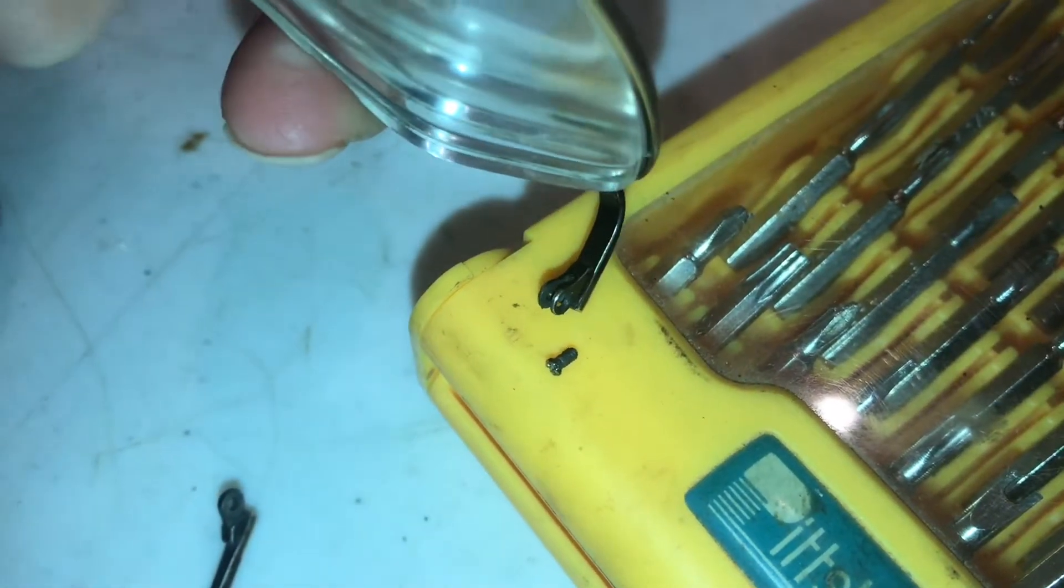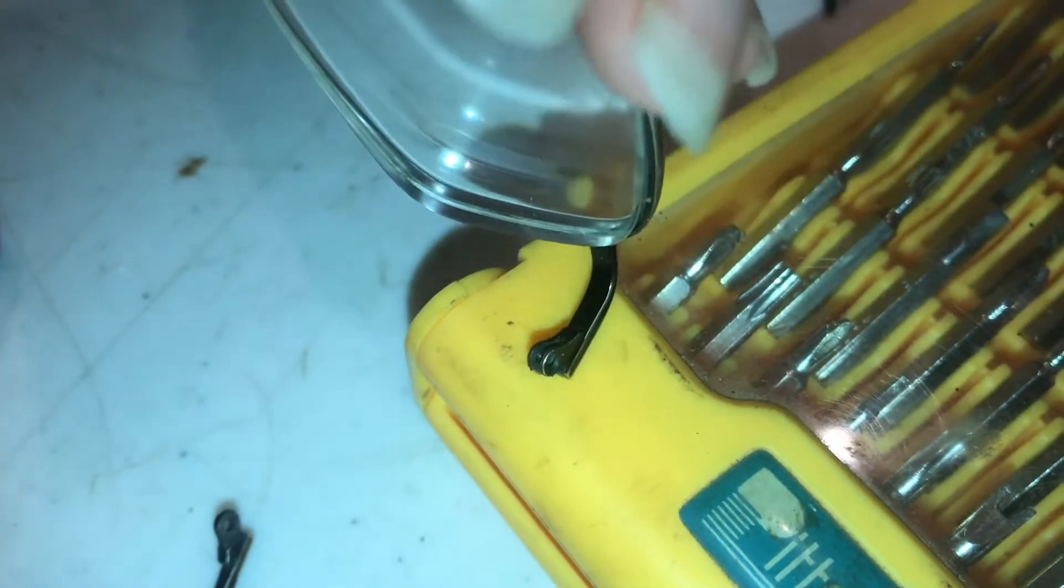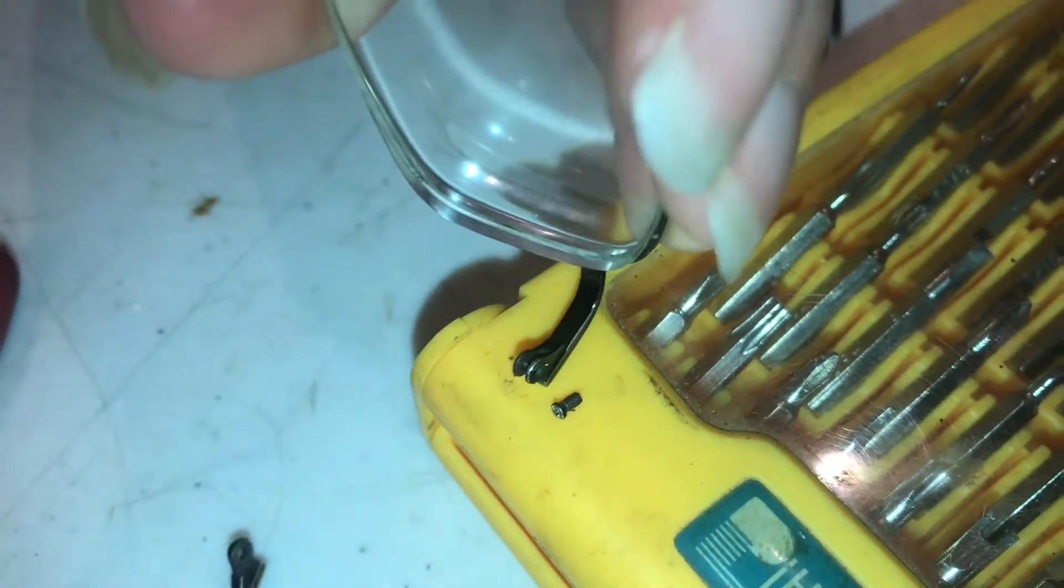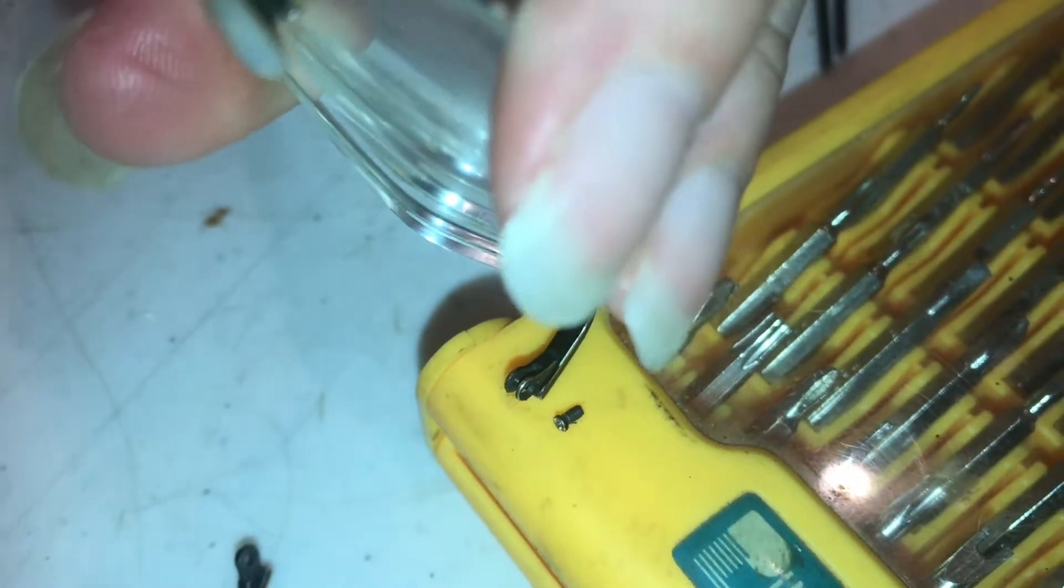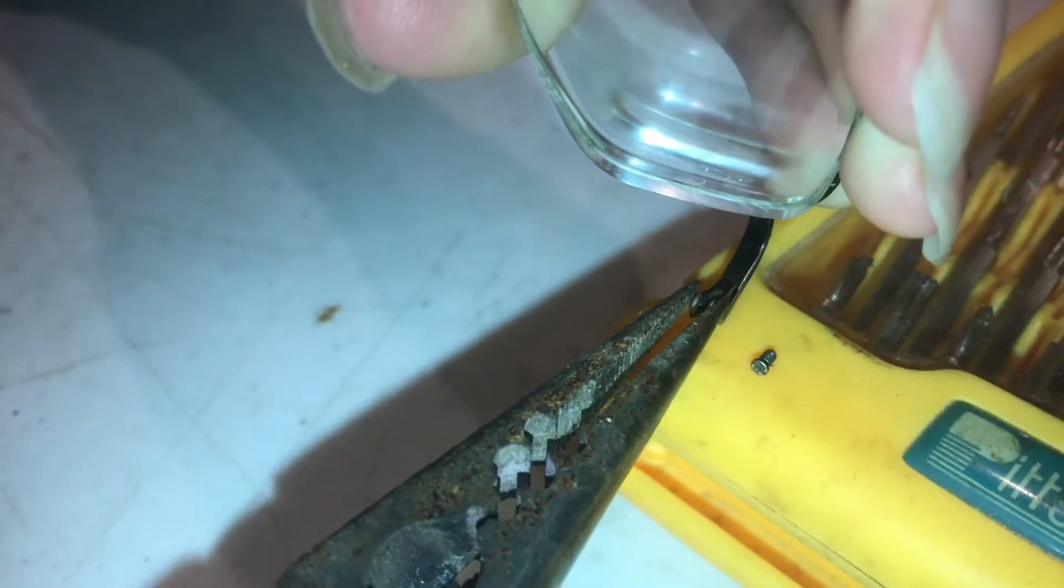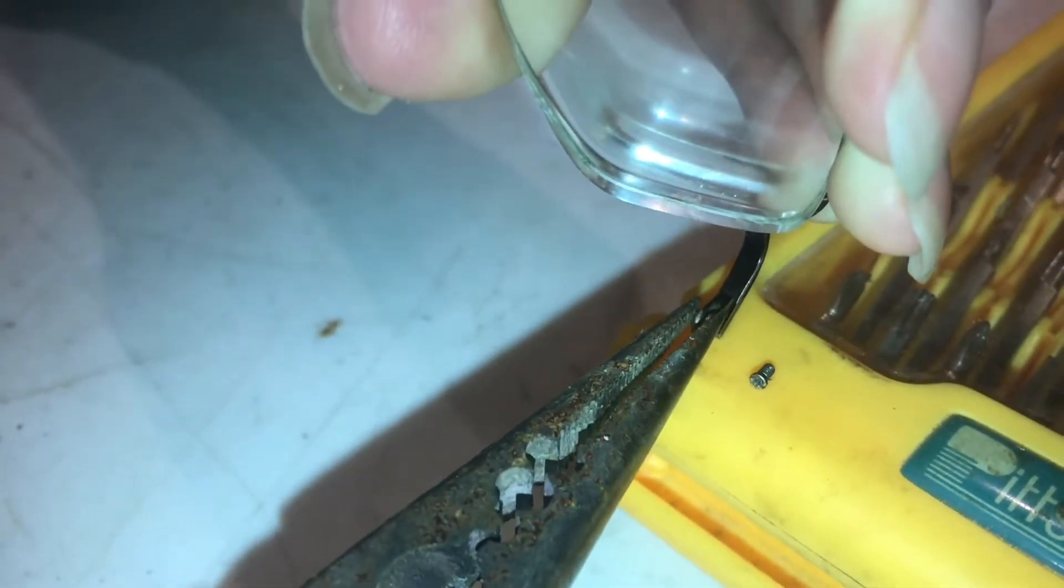They are what we're going to squeeze together with our pliers. If I can get this, it's so tiny, get the pliers on those. All right, so we're squeezing this now and this should snug it up.